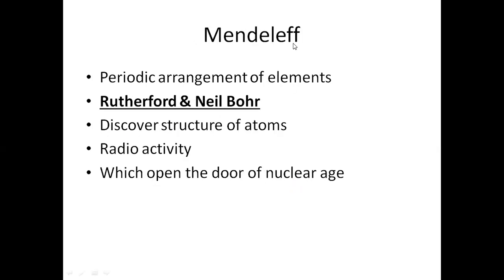After that, Mendeleev made a periodic table called Mendeleev's periodic table. In this table, the arrangement was made on the basis of atomic mass. At that time, atomic number had not yet been discovered, so Mendeleev arranged elements by atomic mass. He was the most popular because he arranged more than 60 to 90 elements, but some elements were placed out of order according to atomic mass, which caused confusion.